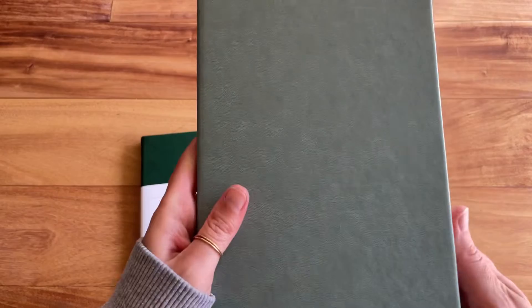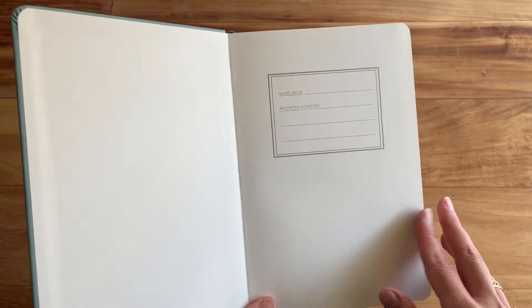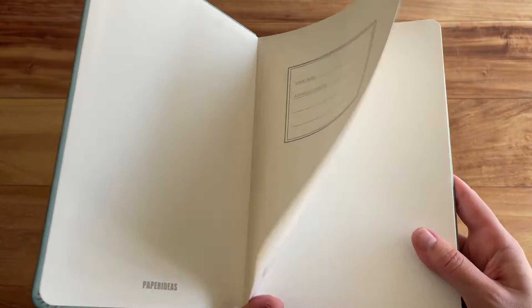Try this again without the sleeve on. Alright, let's open it up. It says Paper Ideas. You can put your name and address right here. And then this would make a great bullet journal because it does have some bullet journal features.